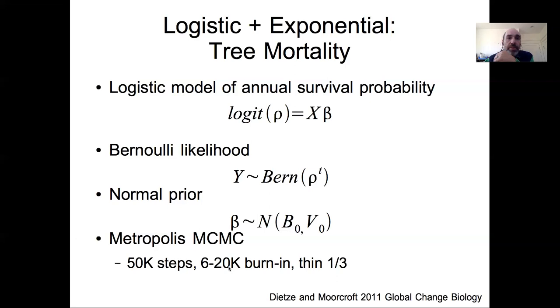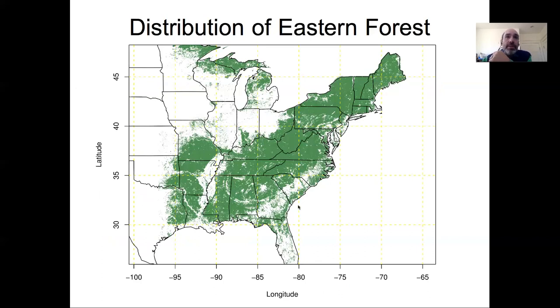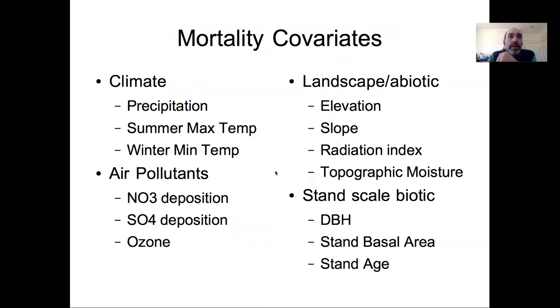The number of steps removed for burn-in was variable because I actually ran this analysis on a number of different plant functional types, and the time it took to burn-in varied a little bit across these different functional types. This was a fairly large data set covering the full extent of the eastern temperate forest region with tens of thousands of forest plots scattered across that region and hundreds of thousands of individual repeat tree measurements occurring across those plots. Normally survival models are hard to fit because mortality is such a low probability event—a background rate here is less than one percent—but in this case because we have hundreds of thousands of observations we can actually still fit fairly complex models with a number of covariates because we actually have the statistical power to do so.